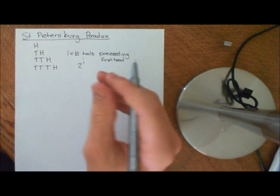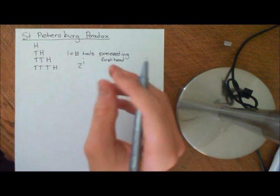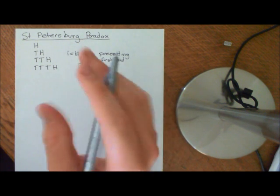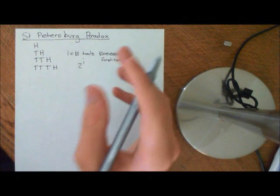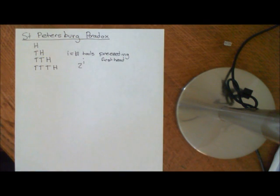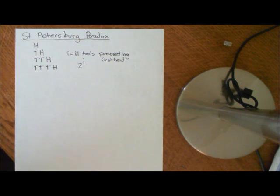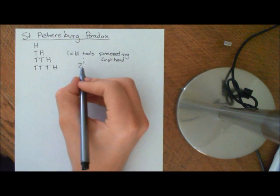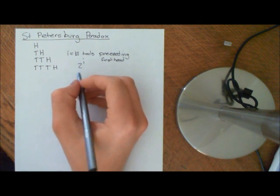We can see that this is going to be related to the geometric distribution. So the question is: what is the expected value of the amount of money you're going to get?